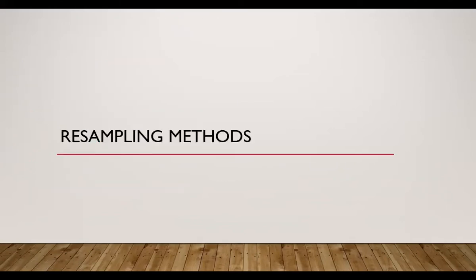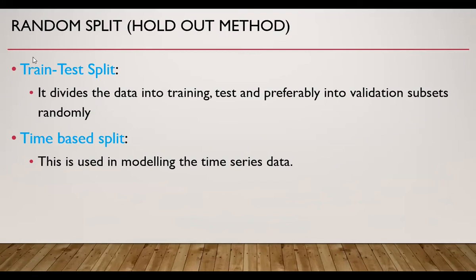Let us first consider resampling methods. The first one is random split, also known as the holdout method, which includes a train-test split where data is divided into training, test, and preferably validation subsets randomly. The other is time-based split, which is used in modeling time series data because time series data is ordered and cannot be randomly split, so we split the data on the basis of the time parameter.